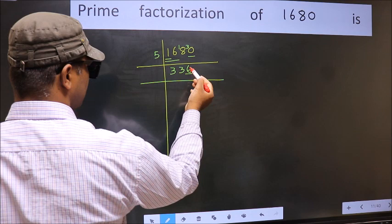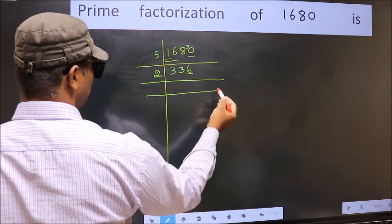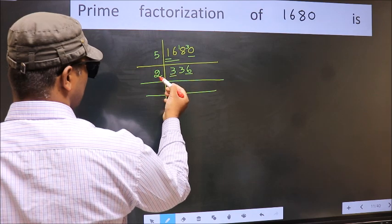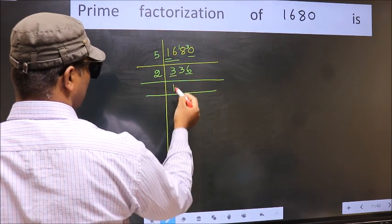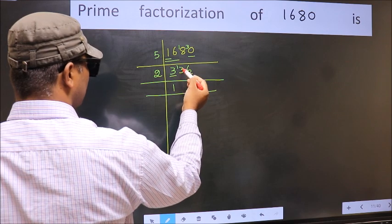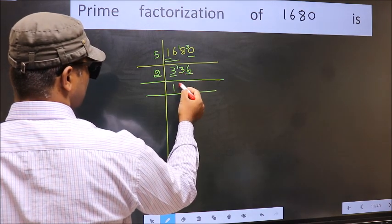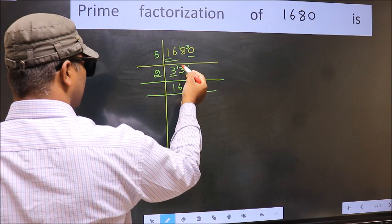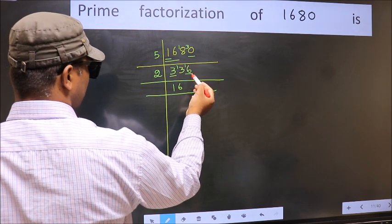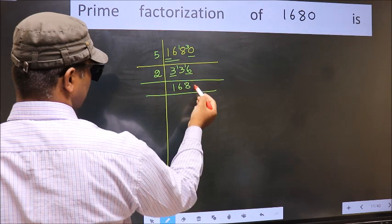Now the last digit is 6, even, so take 2. First number 3. A number close to 3 in the 2 table is 2×1=2. 3-2=1, 1 carried forward: 13. A number close to 13 in the 2 table is 2×6=12. 13-12=1, 1 carried forward: 16. When do we get 16 in the 2 table? 2×8=16.